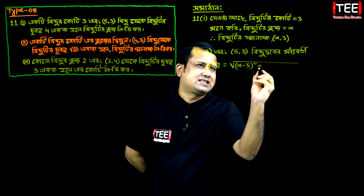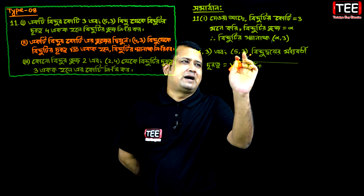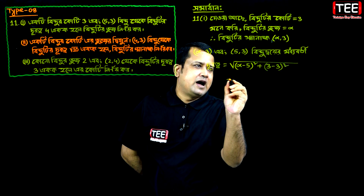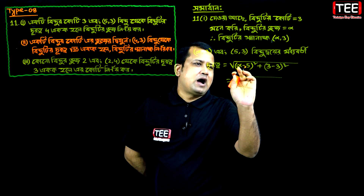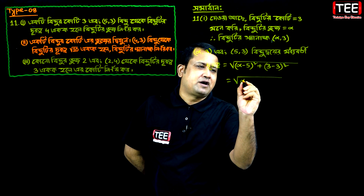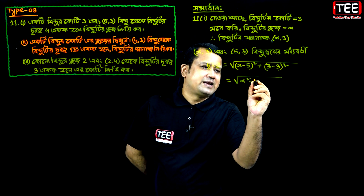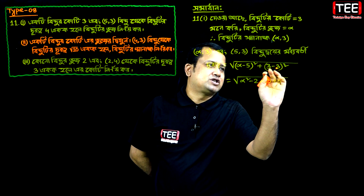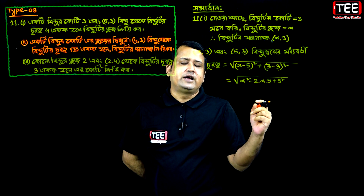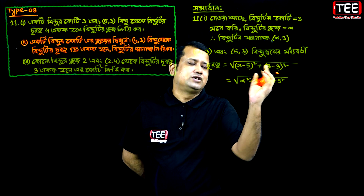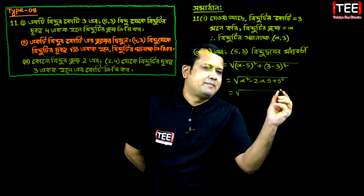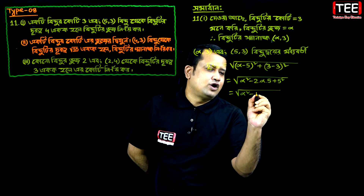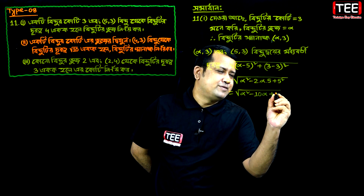Alpha square minus 2 into alpha into 5 plus 5 square, and 3 minus 3 equal to root over of a minus b square. Square minus 2 into alpha into 5 plus 5 square, and 3 minus 3 minus 0. Zero square plus 0 is equal to root over of alpha square minus 2r5 minus 10 alpha plus 5 square.